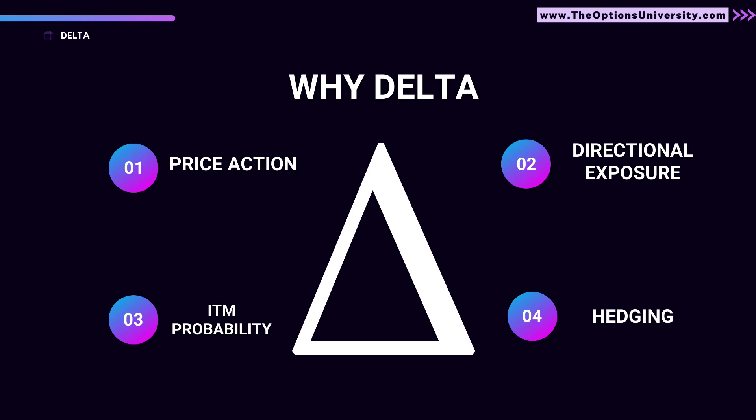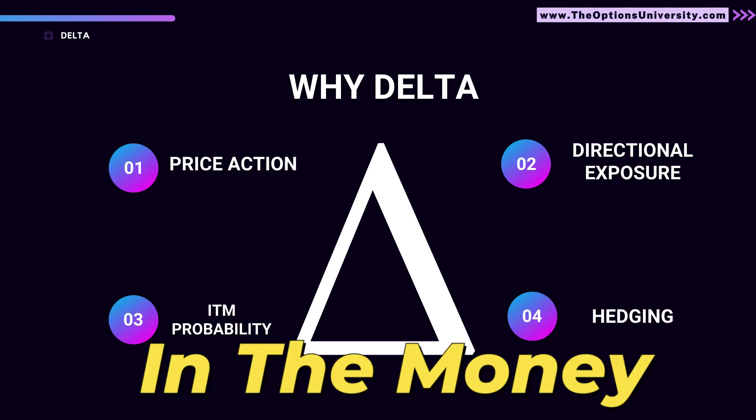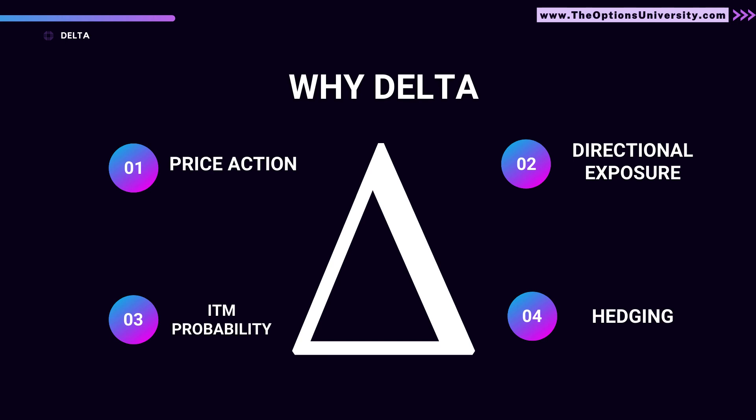The second thing delta decides is directional exposure. Based on the delta, you can see whether your sentiment is bullish, bearish, or neutral. The third use is probability — delta indicates the probability of that option expiring in the money or worthless. By looking at the delta, you can see what chances you have of the option expiring worthless or ending in the money.